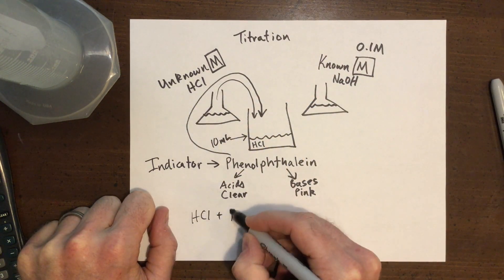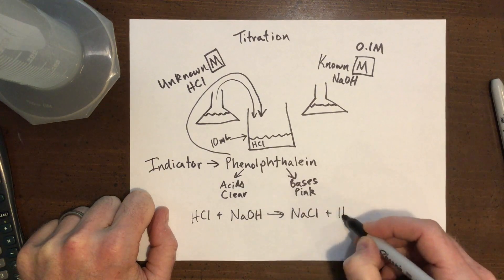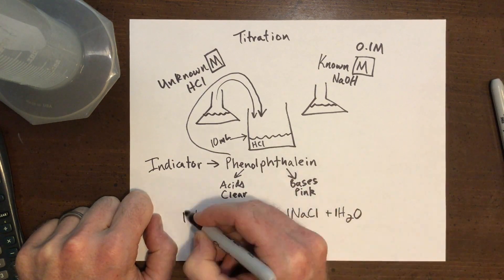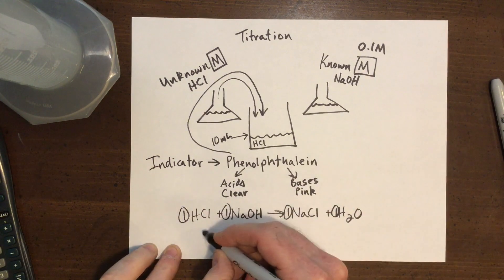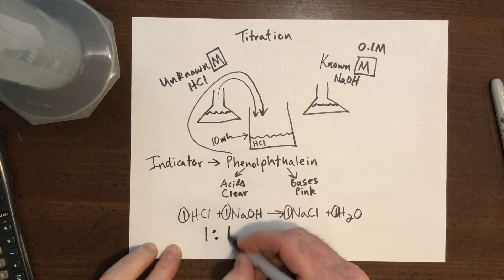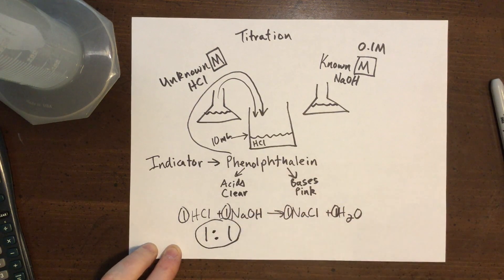Now, let's recall the equation that we're using for this experiment. When I balance the equation, I get ones across the board. So really what I have is a one-to-one ratio between hydrochloric acid and sodium hydroxide. That's going to be key for our situation.